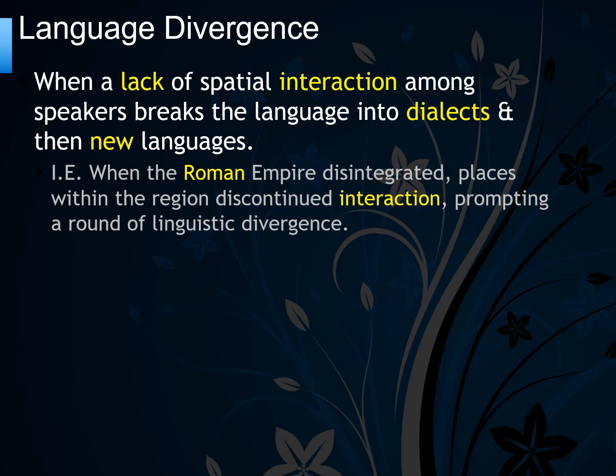When the Roman Empire disintegrated, places within the region discontinued interaction, prompting linguistic divergence. What was originally Latin spoken around the Mediterranean became first different dialects of Latin, and then over time became so different it turned into different languages — French, Spanish, Portuguese, Italian, and so forth.